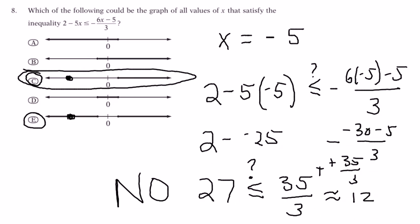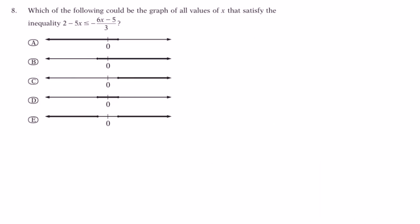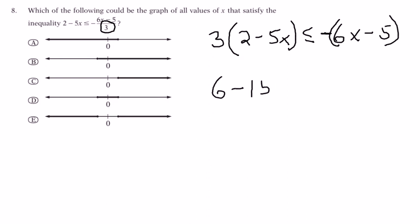So, now, I can also solve this inequality for you. I'm going to do that real fast. Basically, first thing I'm going to do here is, I'm going to multiply both sides by 3 to get rid of this 3 right here. So, I'm going to have 3 times 2 minus 5x less than or equal to negative 6x minus 5. I'm going to have 6 minus 15x less than or equal to negative 6x plus 5.